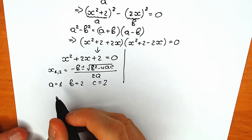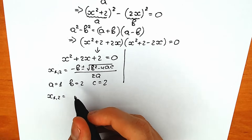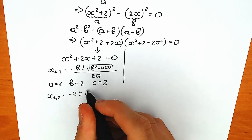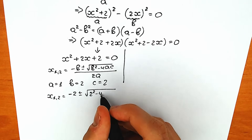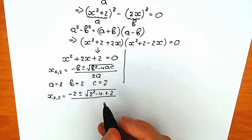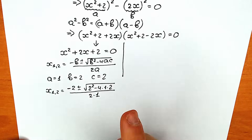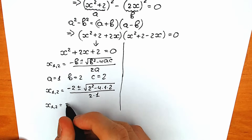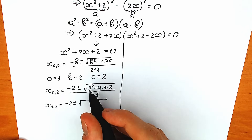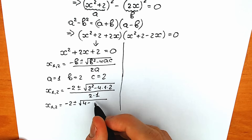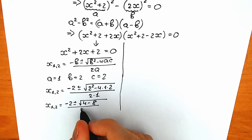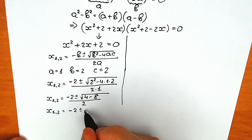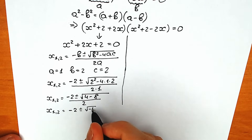Plugging in: x₁,₂ equals minus 2, plus or minus the square root of 2 squared minus 4 times 1 times 2, all over 2 times 1. That gives minus 2 plus or minus square root of 4 minus 8, over 2. Simplifying inside the square root: we get minus 2 plus or minus square root of negative 4, divided by 2.